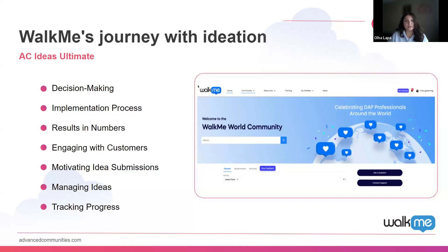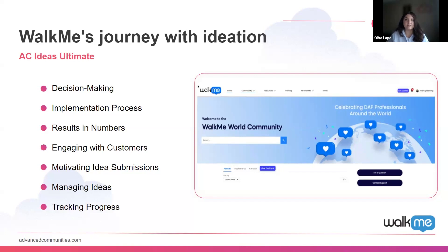The next question: we need to collect specific data for ideas — how can we do it? Since it's native Salesforce, you can create fields in the idea submission form that will gather the information you need. You can make those fields mandatory or optional — in both cases this will give you more visibility on the ideas, so you'll be more prepared to say whether you're ready to implement it or whether you'd like to decline it. Usually there are lots of ideas but you can't implement them all.